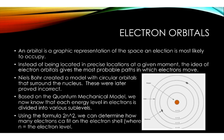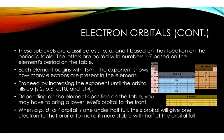Using the formula 2n², we can determine how many electrons can fit in a single electron shell where n equals the electron level.